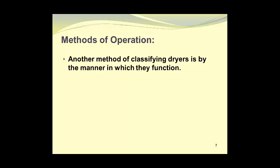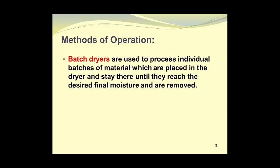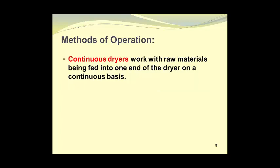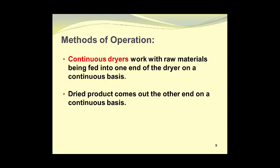Another method of classifying dryers is by the manner in which they function. Batch dryers are used to process individual batches of material which are placed in the dryer and stay there until they reach the desired final moisture and are removed. Continuous dryers work with raw materials being fed into one end of the dryer on a continuous basis. Dried product comes out the other end on a continuous basis as well.